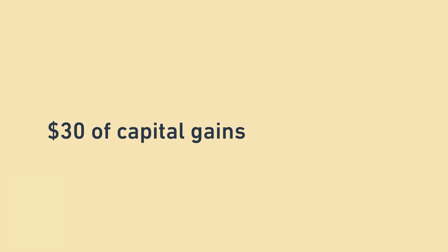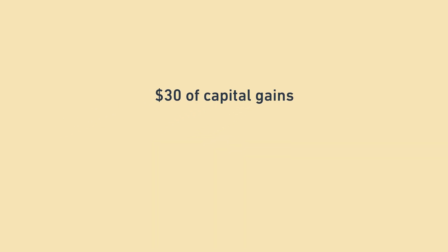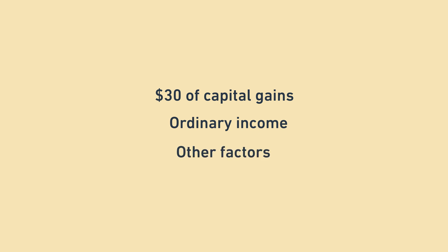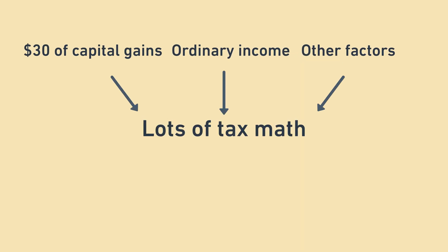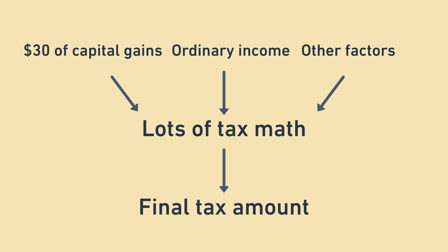Note that $30 is not how much tax you pay — it's the amount of gain you need to report, and the actual amount of tax depends on that $30, on your ordinary income, and on a wide variety of other factors that are outside the scope of this video, since I'm focusing on just the high-level mechanics here. The gist is that all of this feeds into the rest of your tax computations and affects your overall tax amount. Generally speaking, the more gains you have, the more tax you'll pay.